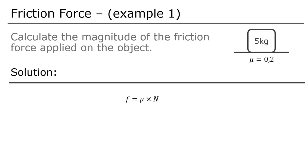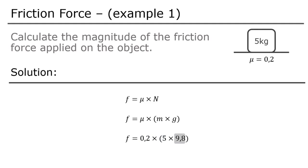Friction force can be calculated as coefficient of friction times the normal force applied on the object. On a horizontal surface, the normal force equals mass times gravitational acceleration. The coefficient of friction is 0.2, mass is 5 kg, and gravitational acceleration is 9.8 m/s². The magnitude of the friction force experienced by the object is 9.8 newtons.